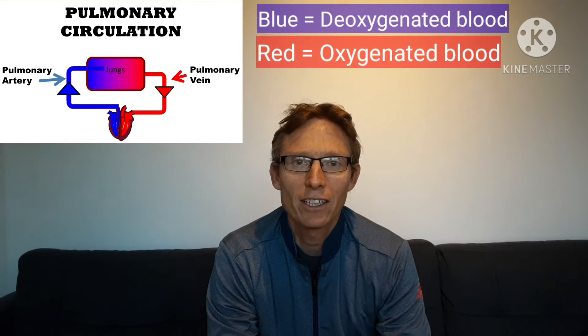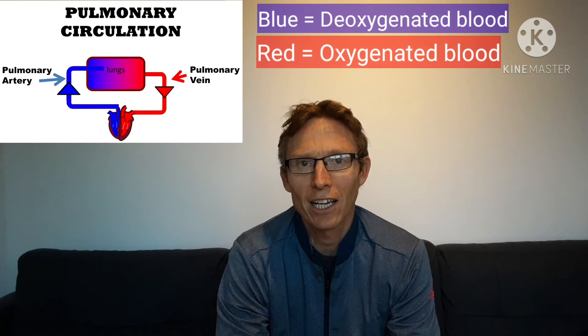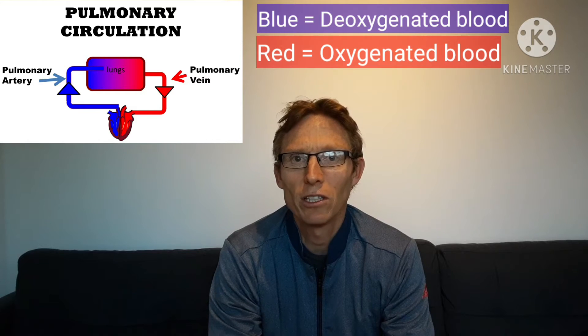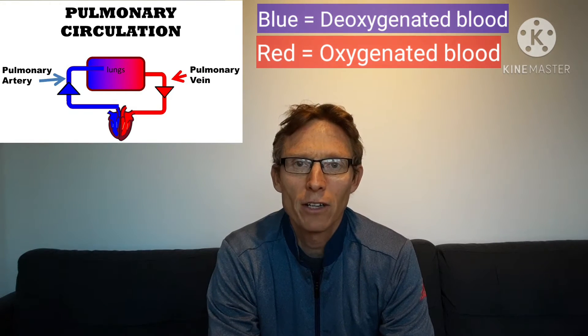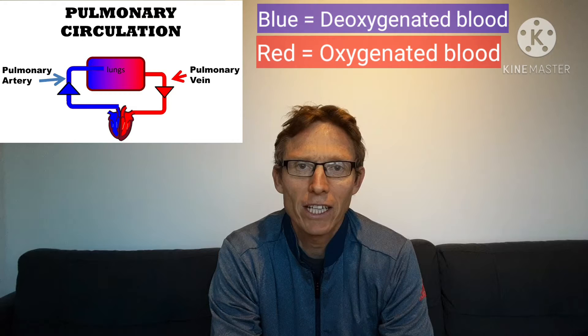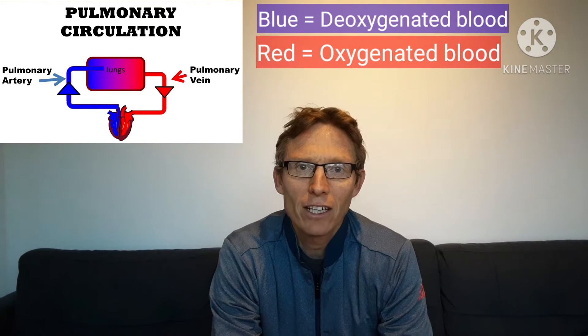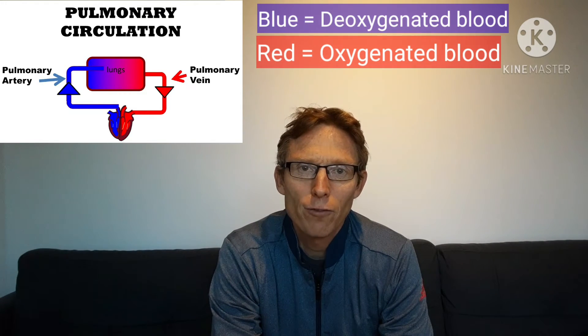Let's look at the pulmonary circulation first. The pulmonary circulation is the part where the heart links to the lungs — the word 'pulmonary' is related in Latin to lungs. In the pulmonary circulation, deoxygenated blood leaves the right ventricle, flows to the lungs in the pulmonary artery, reaches the lungs, and using capillaries picks up oxygen and drops off carbon dioxide. It then travels back to the left side of the heart in the pulmonary vein, entering the left atrium.